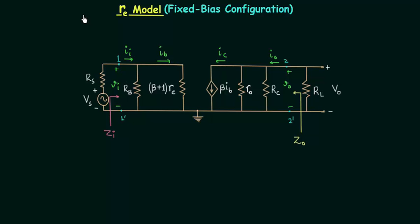In the previous lecture we obtained input and output impedances using the RE model for common emitter fixed bias configuration. In this lecture we will find out current gain, voltage gain, overall current gain, and overall voltage gain.